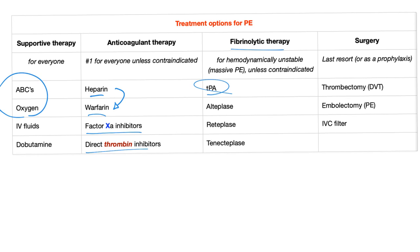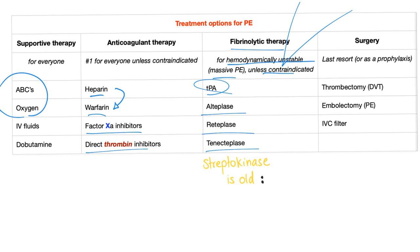Fibrinolytic therapy: the famous TPA, especially if the patient is hemodynamically unstable, such as in massive PE. Again, unless contraindicated — there are absolute and relative contraindications to TPA. Alteplase, reteplase, tenecteplase — all of these are fancy names for tissue plasminogen activator.